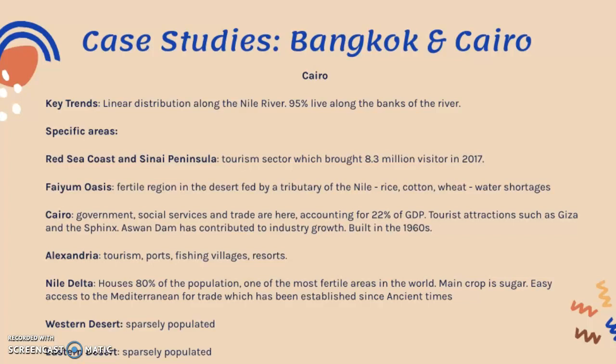There are some areas outside Cairo with fairly dense populations, but nowhere near the concentration in Cairo and the Nile delta. On the Red Sea coast and Sinai Peninsula to the east, there is a significant population because of the tourism sector, which brought 8.3 million visitors in 2017. South of Cairo, the Fayum Oasis is a fertile region in the desert fed by a Nile tributary, supporting an agricultural industry producing rice, cotton, and wheat — though it suffers from water shortages due to reliance on that single tributary.